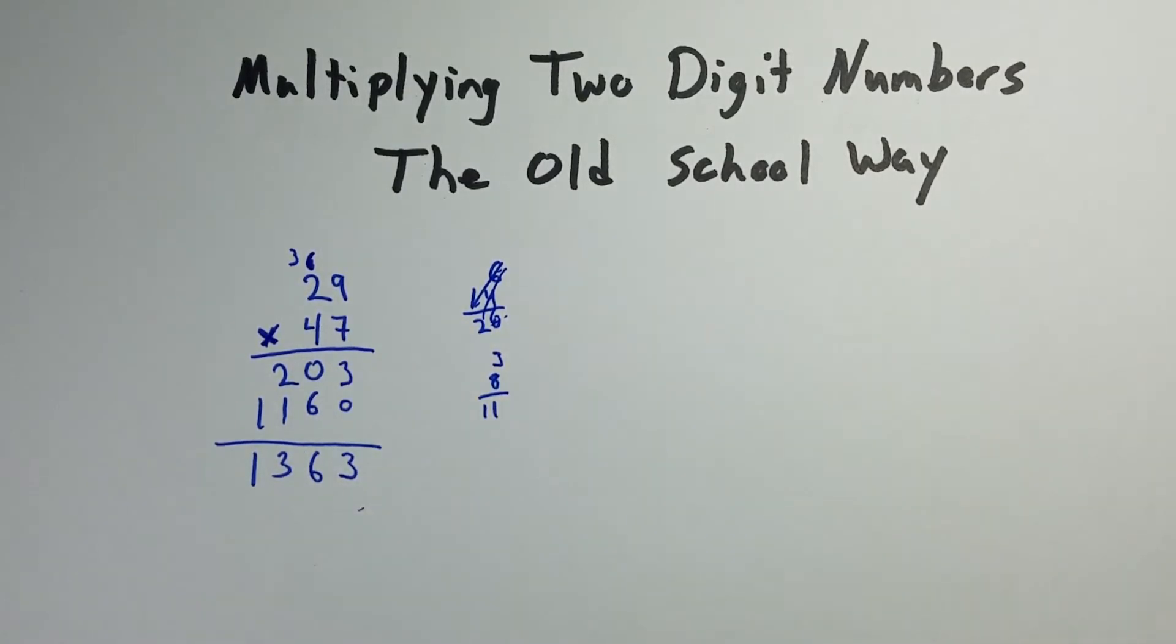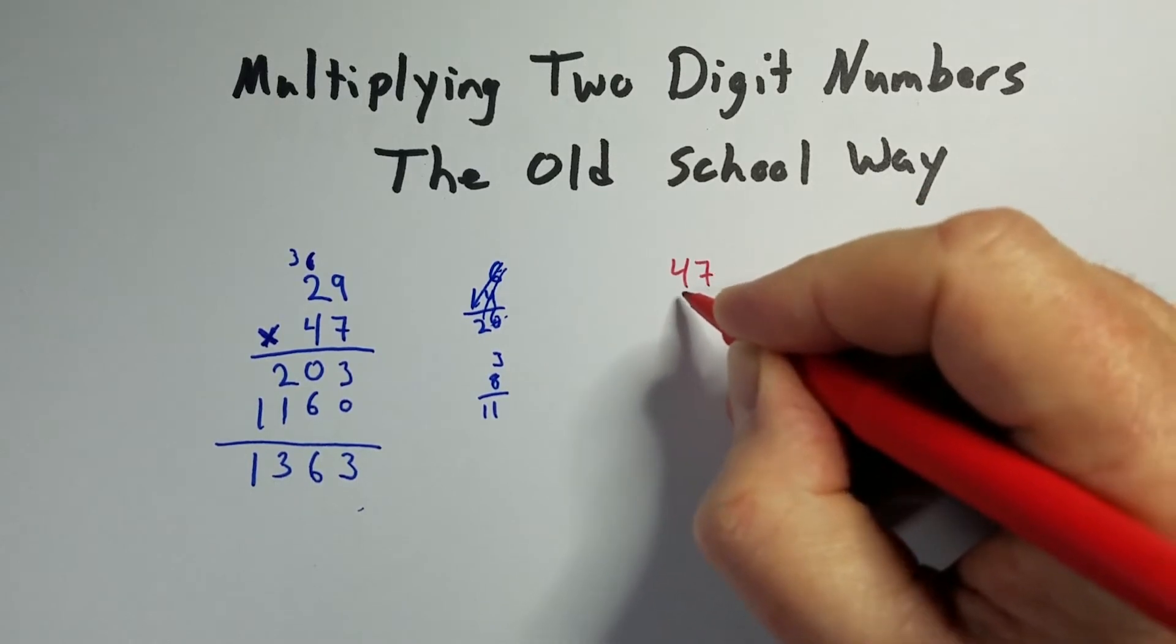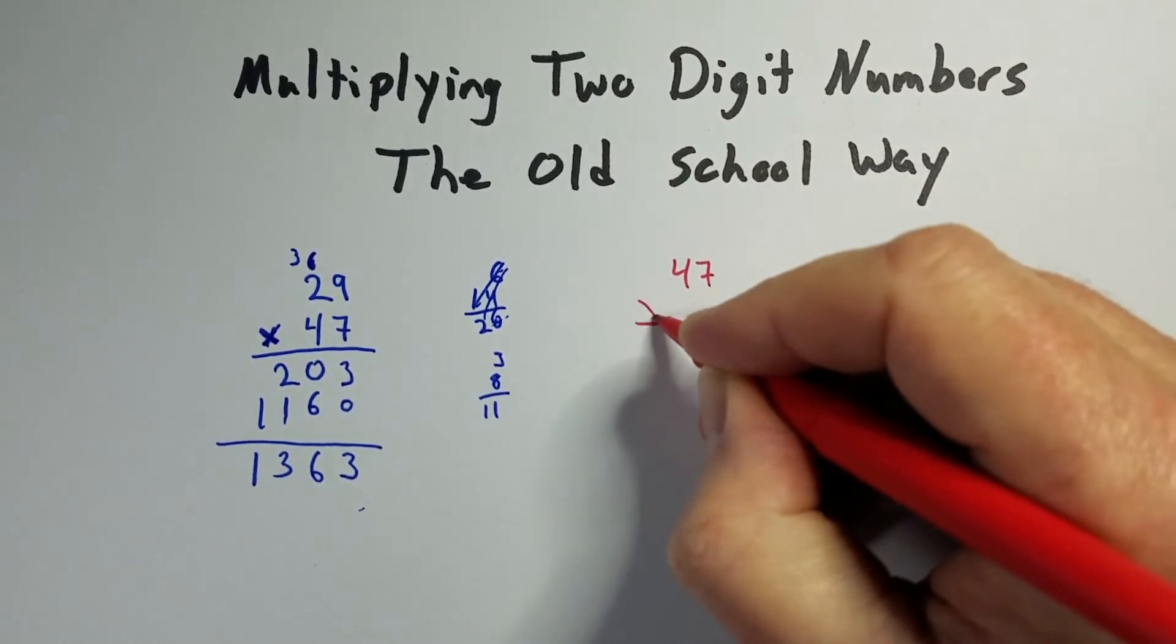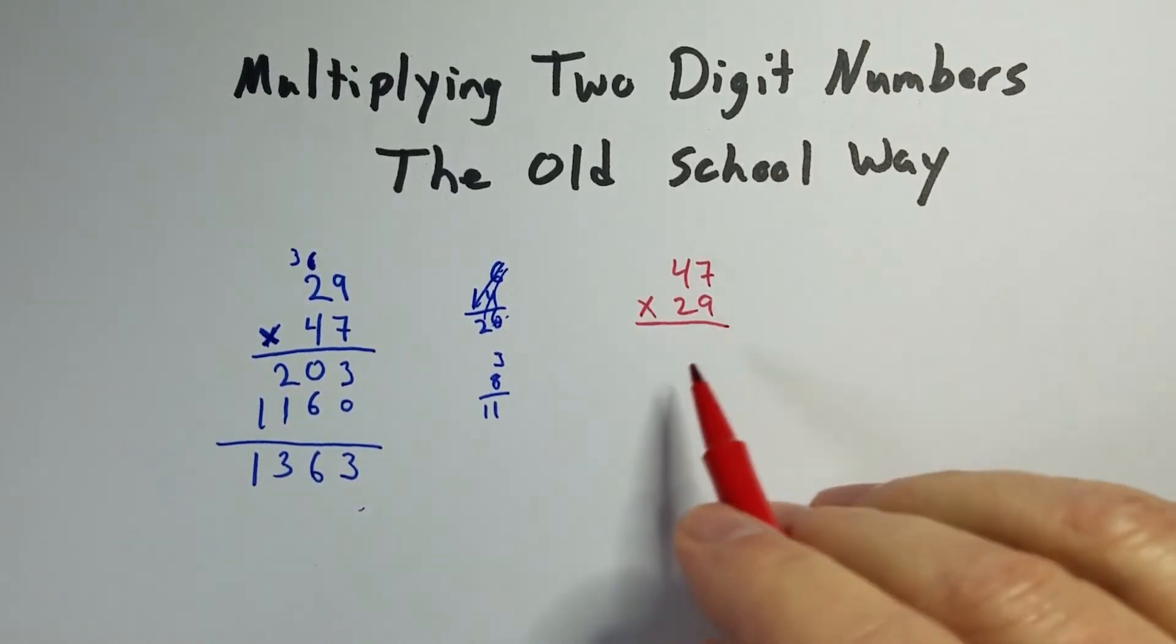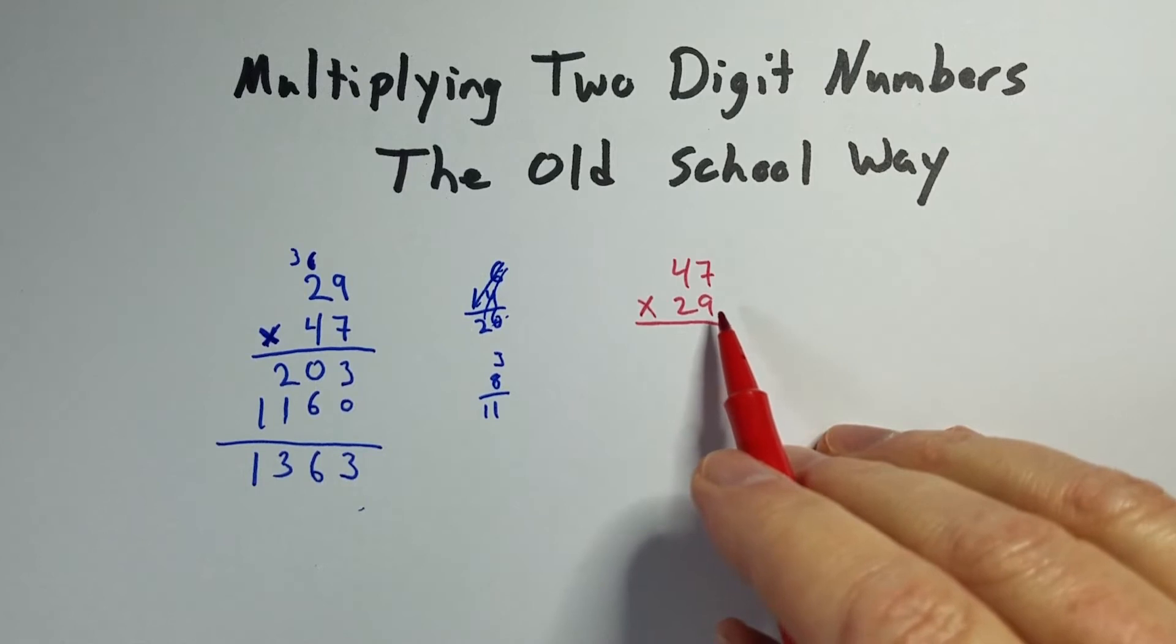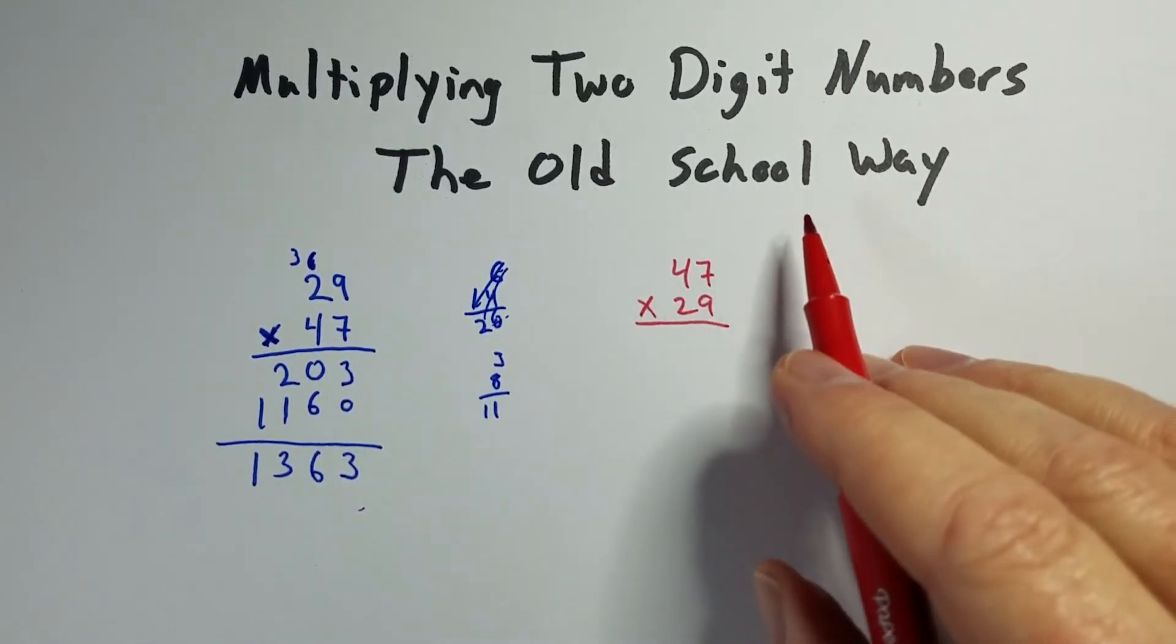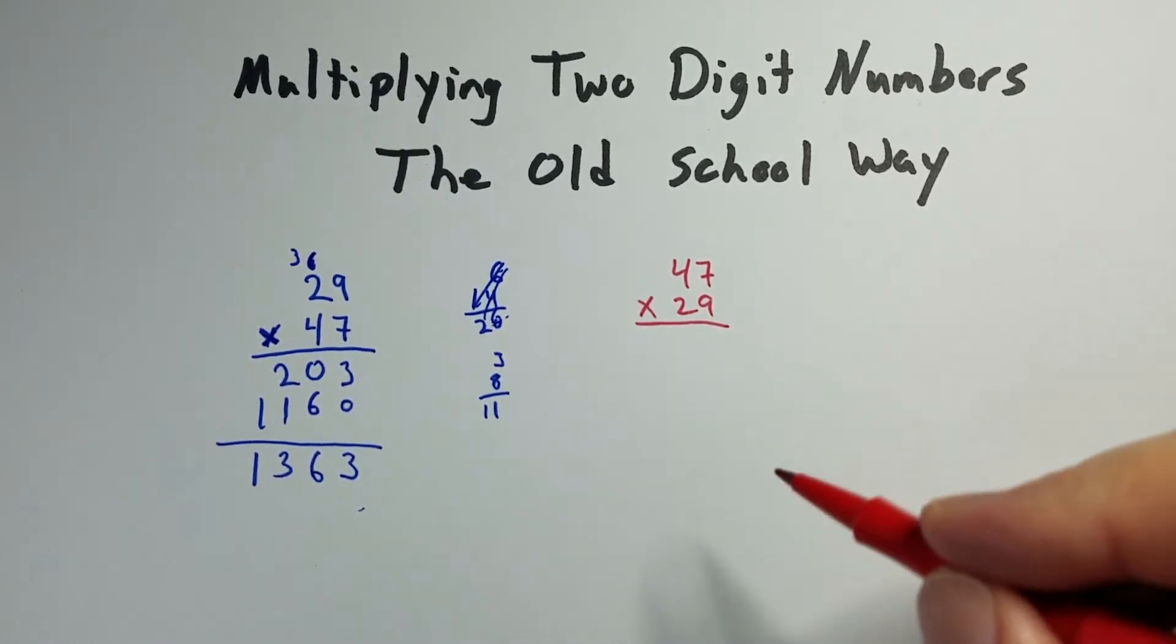We can do this another way. What if we multiplied 47 times 29? Basically the same two numbers, except in a different order. Instead of 47 times 29, we do 29 times 47. You should get the same thing. But let's just double check. More practice.